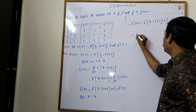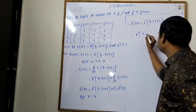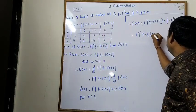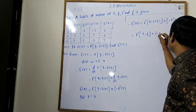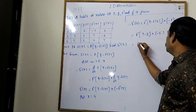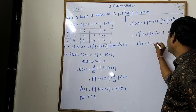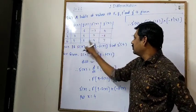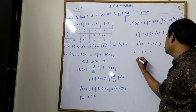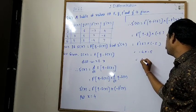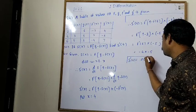To find s'(4), put x = 4. s'(4) = f'(9 − f(4)) · (−f'(4)). From the table, f(4) = 3 and f'(4) = 5. So f'(9 − 3) = f'(6) = −4. Therefore s'(4) = −4 · (−5) = 20.